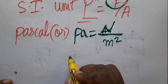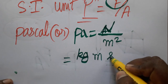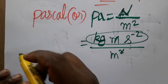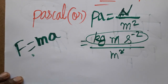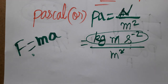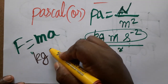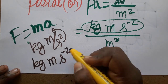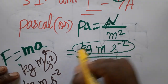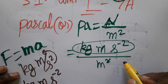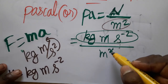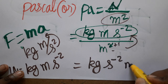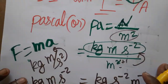In the MKS system, Newton is already kg·m·s⁻². This comes from F = ma: mass in kg, acceleration in m/s², so 1 Newton = kg·m·s⁻². Dividing by area (m²), one meter cancels, giving kg·m⁻¹·s⁻². Therefore, the SI unit of Pascal is kg·m⁻¹·s⁻².